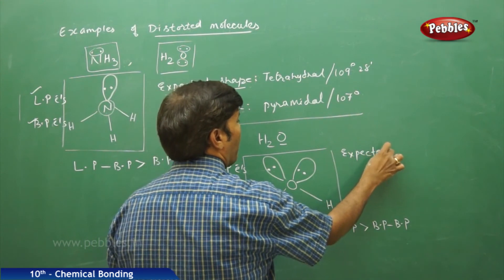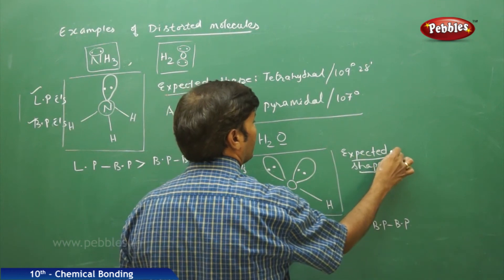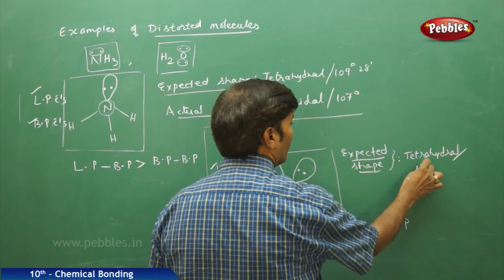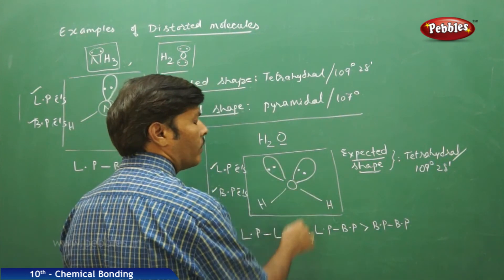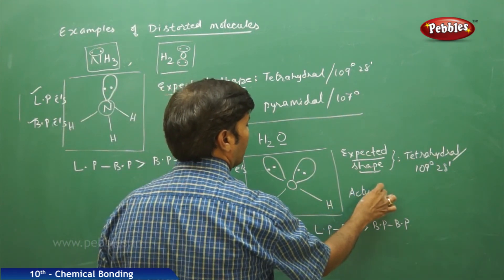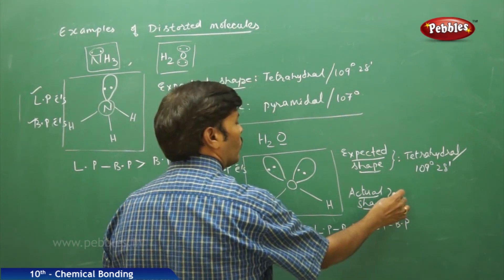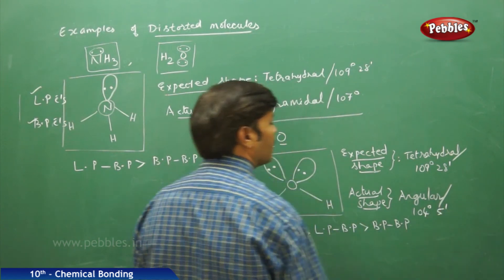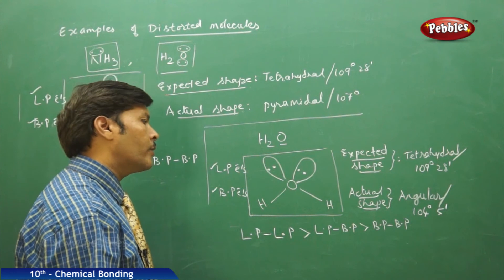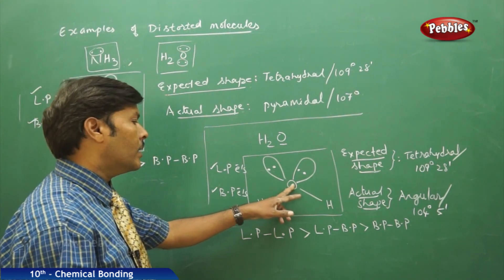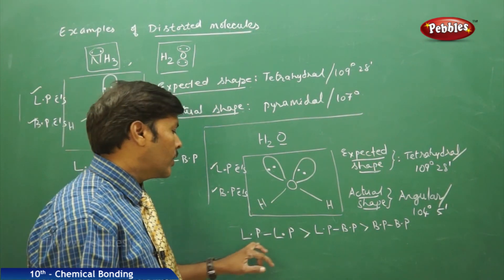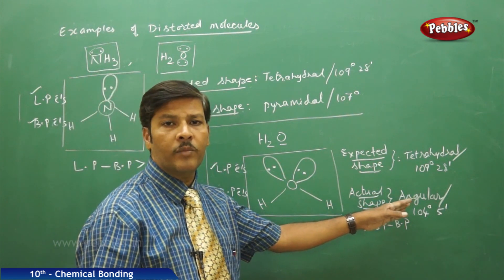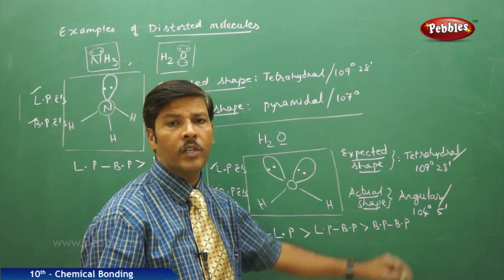The expected shape of water is tetrahedral with a bond angle of 109 degrees 28 minutes, but because of the repulsions the actual shape becomes angular, with the bond angle decreasing from 109 degrees 28 minutes to 104 degrees 5 minutes. According to VSEPR theory, the central atom oxygen undergoes all three types of repulsions — lone pair to lone pair, lone pair to bond pair, and bond pair to bond pair — which is why the molecule is distorted and the shape has become angular.